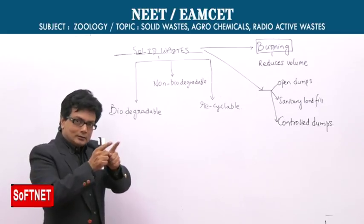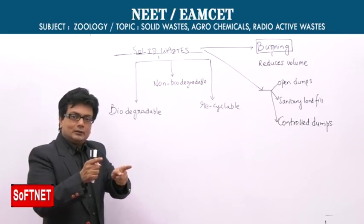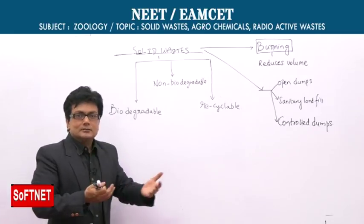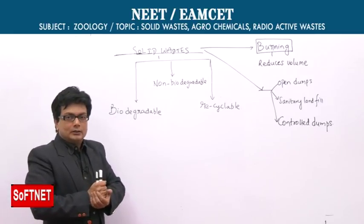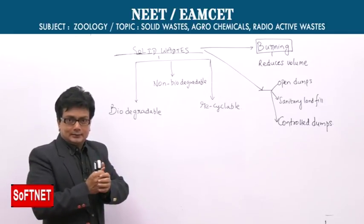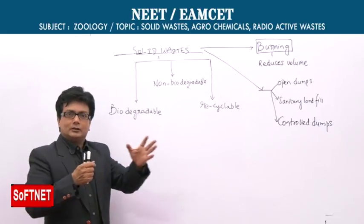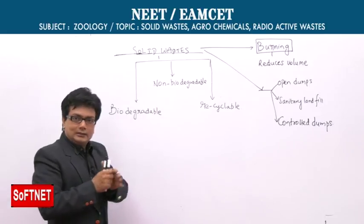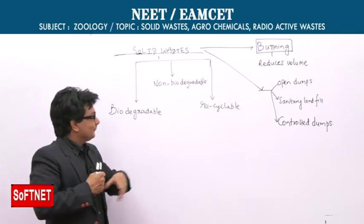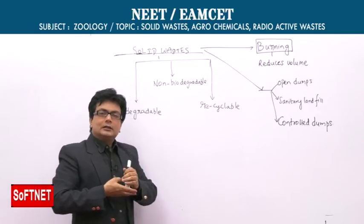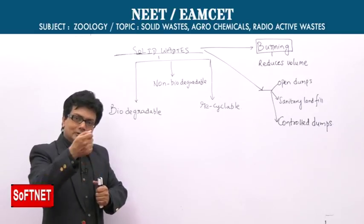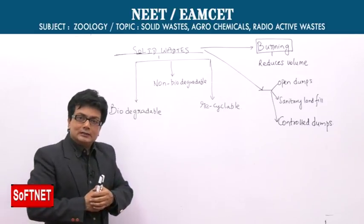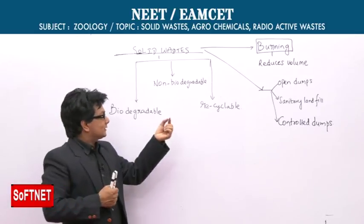Solid waste includes both biodegradable and non-biodegradable as well as recyclable categories. Rag pickers do an extremely good job by segregating and separating solid waste into non-biodegradable, biodegradable, and recyclable components. By separating the solid waste this way, we can deal with it much more effectively.